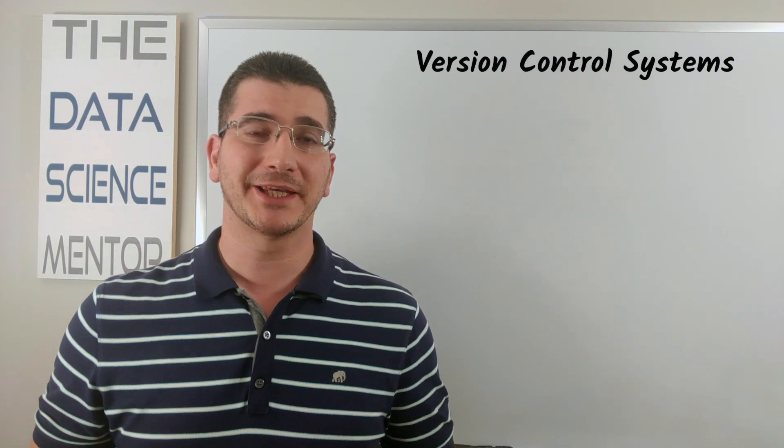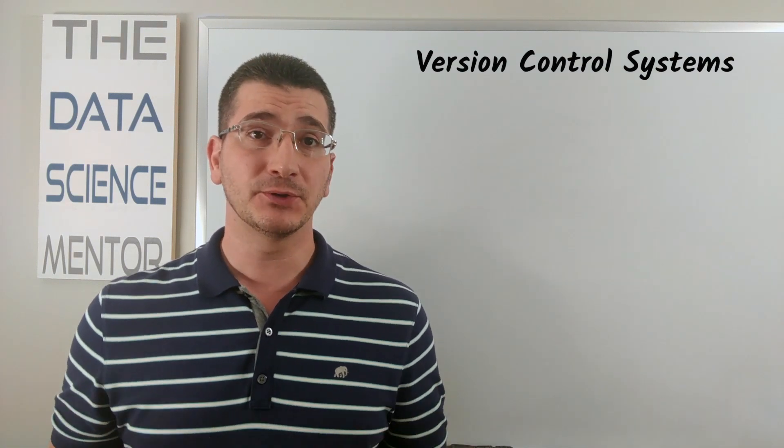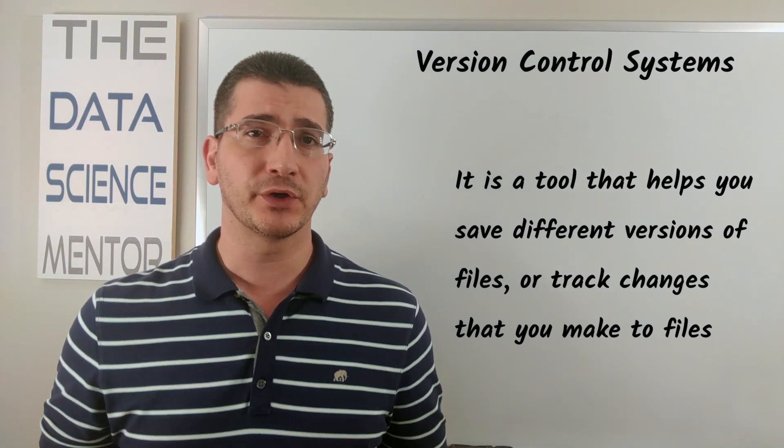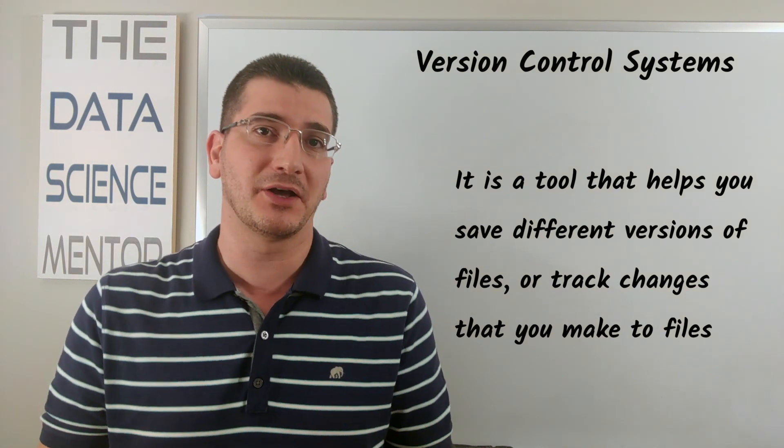So what is a version control system? Well as the name implies, it's a tool that helps you save different versions of files. In other words, it helps you keep track of changes that you make to files pertaining to a project that you're working on, for example.